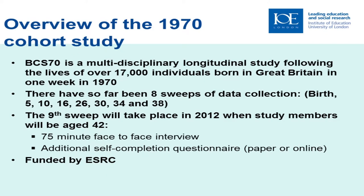Moving on very briefly to the 1970 study: it has a very similar structure, so I won't go through it in detail. It has the same geographical issues — Great Britain rather than the whole UK — and again you can see the slightly random ages at which cohort members were contacted for practical resource reasons. At age 26 it was just a postal survey because there was no funding for more, but even so they got 9,003 people to respond. As we speak, the ninth sweep of BCS70 is taking place — a 75-minute face-to-face interview — and for the first time at age 42 they're being asked to consent to record linkage.